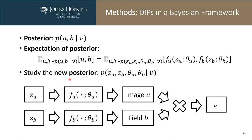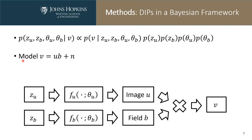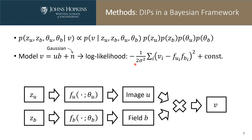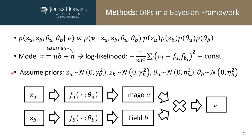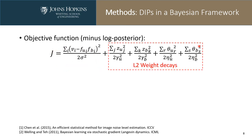We only need to study this new posterior using our parameterization. According to Bayes' rule, the posterior is proportional to the likelihood times the priors. We assume the priors are independent from each other. The log-likelihood can be expressed using the Gaussian noise model. We assume the priors are also Gaussian distributions, which allows them to be easily expressed. Combining the likelihood and the priors, we can write down the optimization objective function. The first term is an MSE loss, and the last four terms are weight decays.